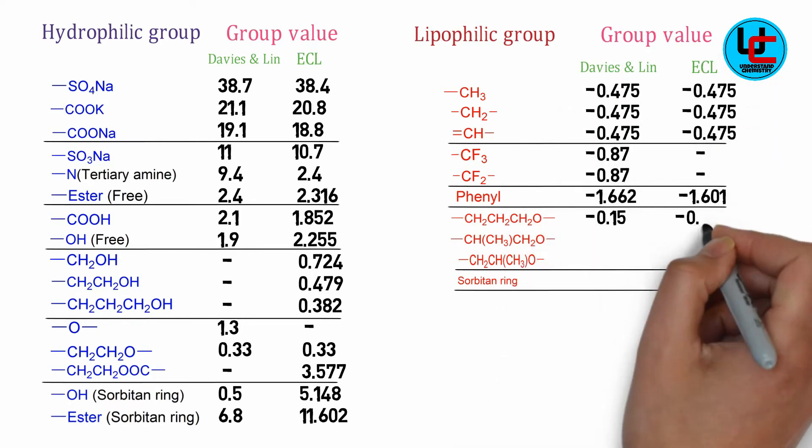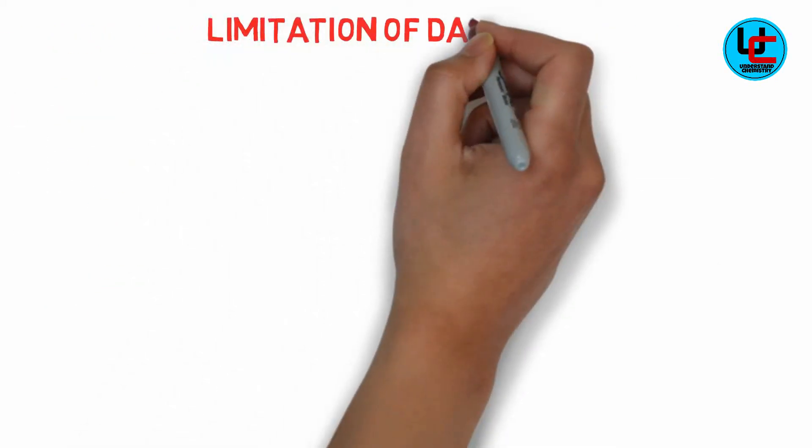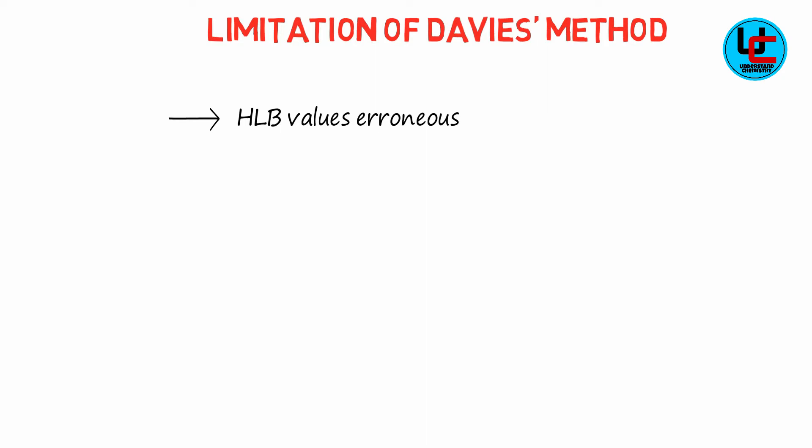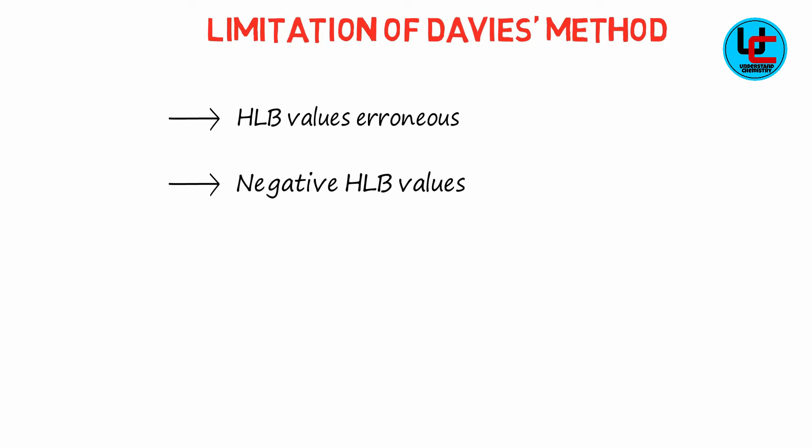From the examples discussed before we see that this is an easy approach to calculate HLB, but this formula has also some limitations. The HLB values of various surfactants calculated by Davies are erroneous as they differ greatly with the experimental data.